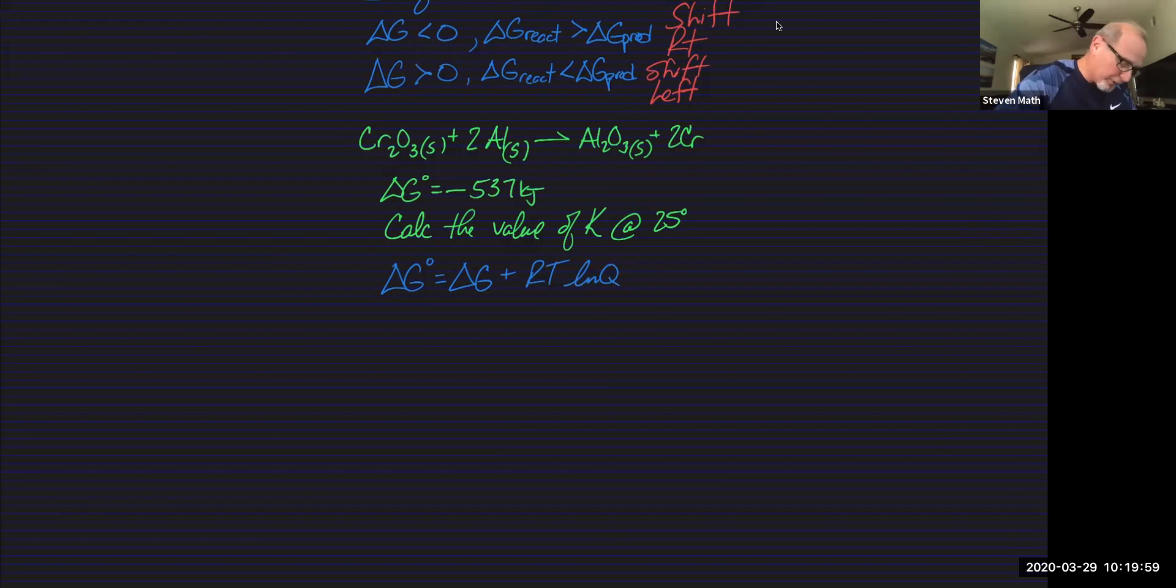delta G prime equals zero, which equals delta G plus RT and now instead of Q, we have ln K. Well, a quick rearrangement of that will tell us that delta G equals negative, throw the RT ln K over to the other side.